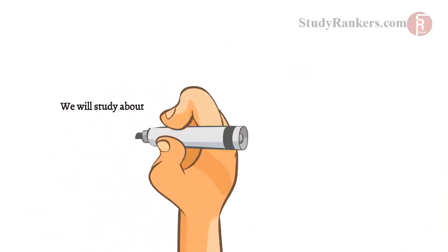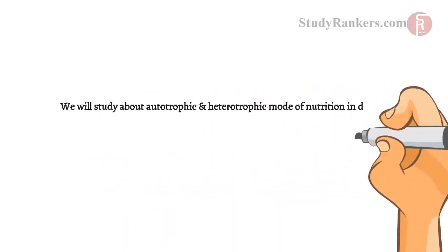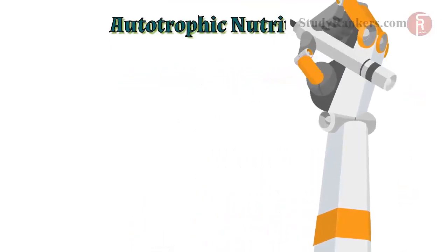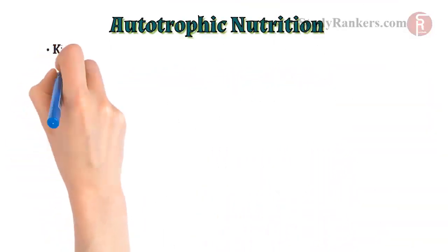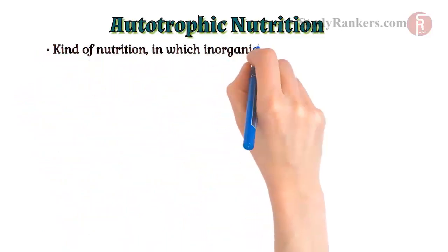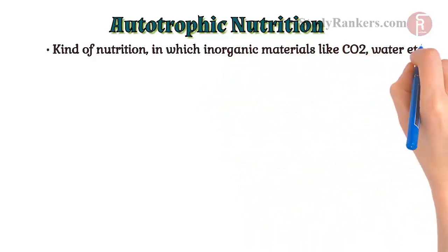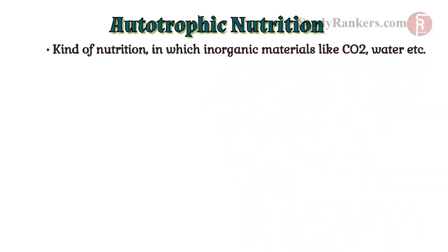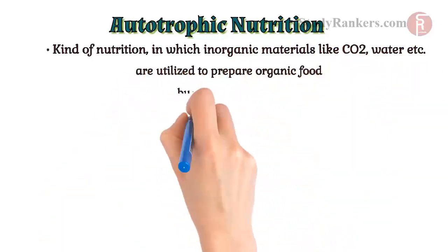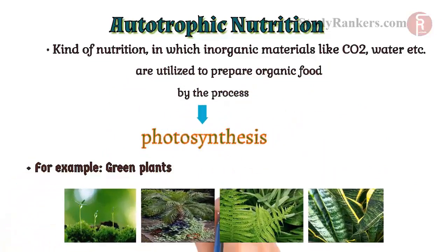We will study about autotrophic and heterotrophic mode of nutrition in detail. Autotrophic nutrition is a kind of nutrition in which inorganic materials like CO2, water etc. are utilized to prepare organic food by the process of photosynthesis. For example, green plants.